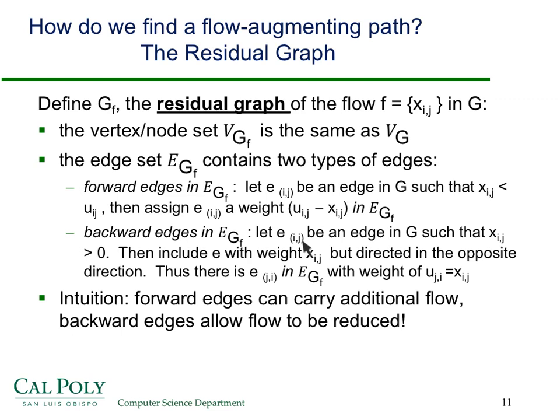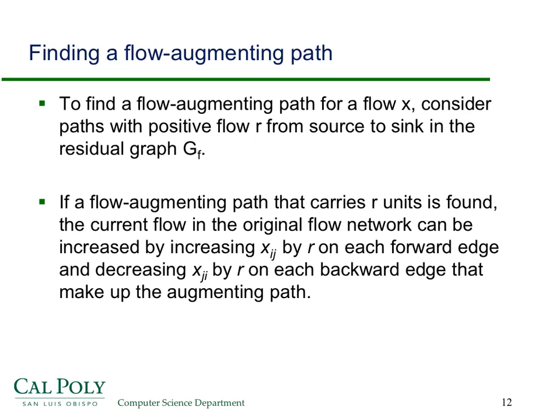In addition to forward edges there are backward edges. If edge E_ij has flow X_ij greater than zero, then we define a new edge directed in the opposite direction with weight equal to the flow X_ij. So there is an edge in the residual graph directed backwards relative to the original, with weight X_ij. Forward edges carry additional flow; backward edges allow flow to be reduced or reversed. We'll see how that works in later slides.